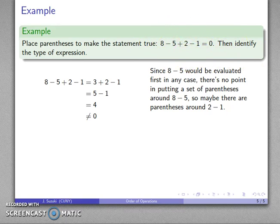Maybe I'll throw them around the 2 minus 1. So I throw parentheses around 2 minus 1, and parentheses say do stuff inside first. That gives me 8 minus 5, and my do stuff inside, that's going to be 1. Since I have subtraction and addition, they're equiprecedent, I go from left to right. The first thing I evaluate, 8 minus 5, that's 3, plus 1, is 4, isn't 0, isn't what I want it to be.